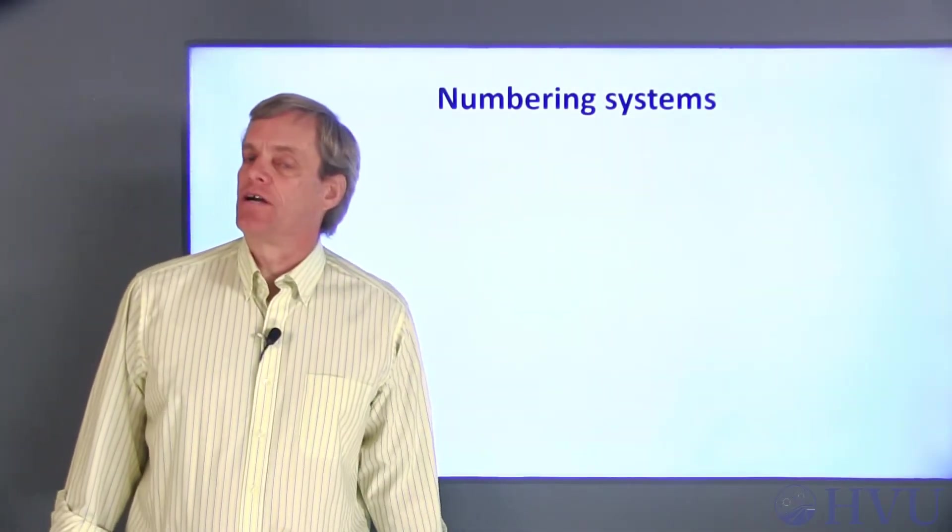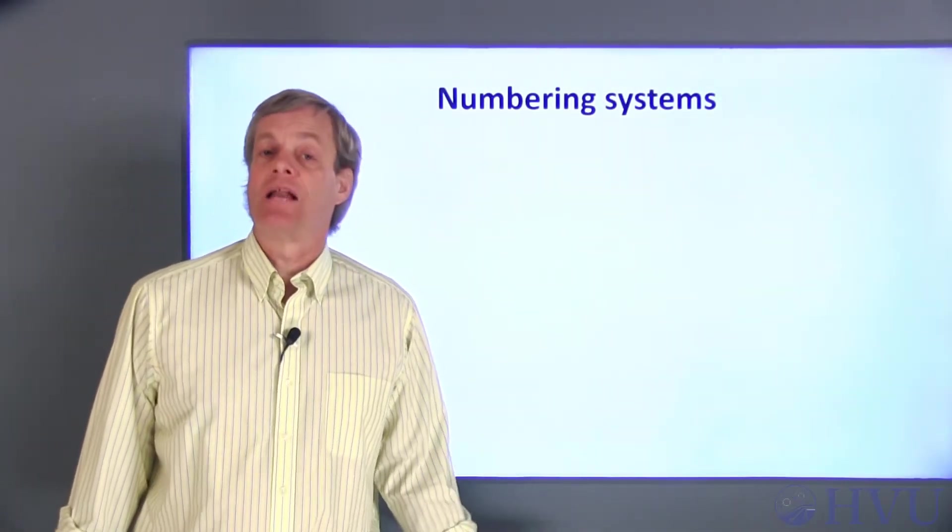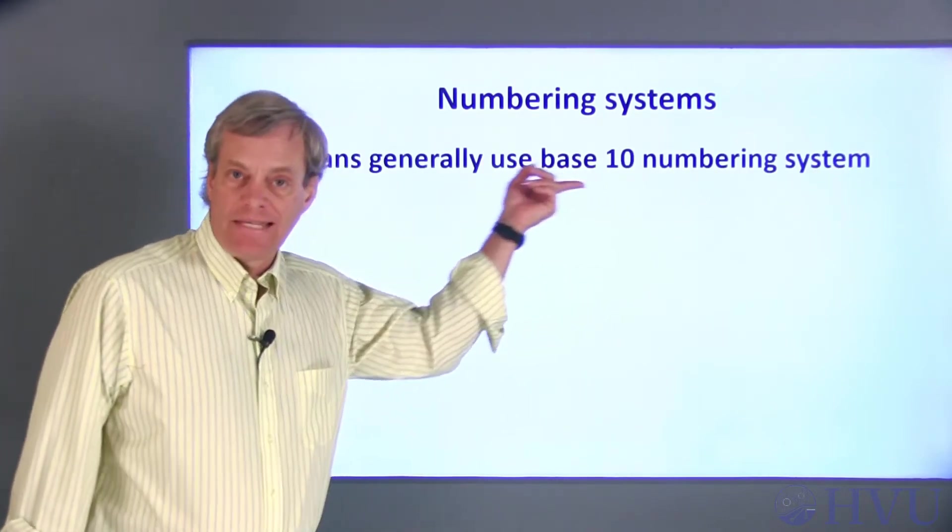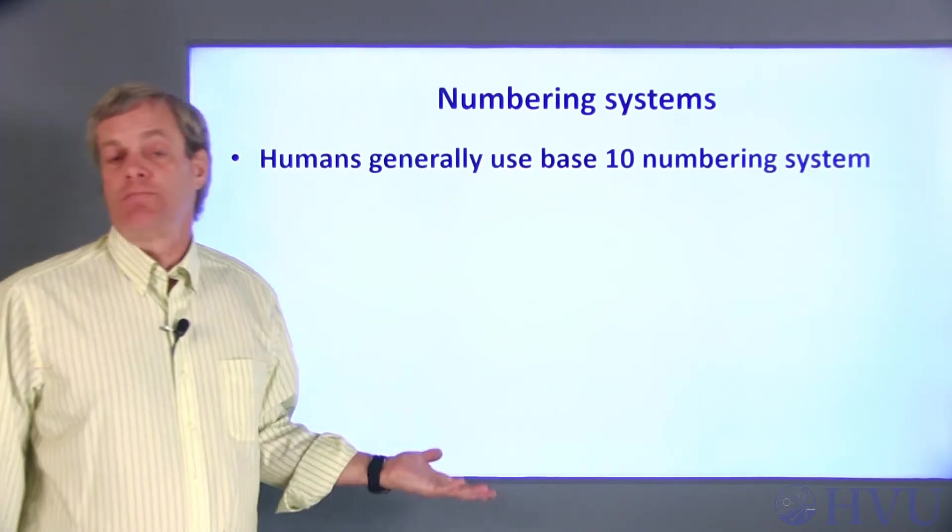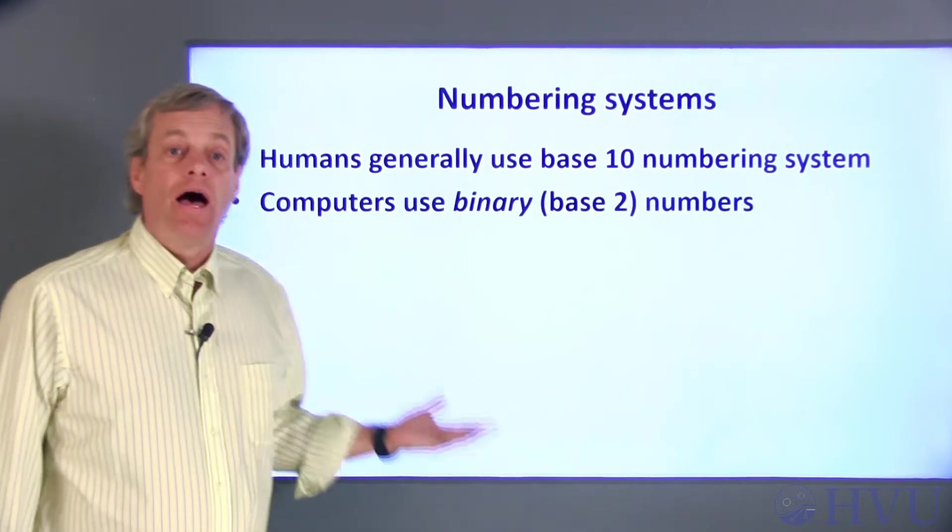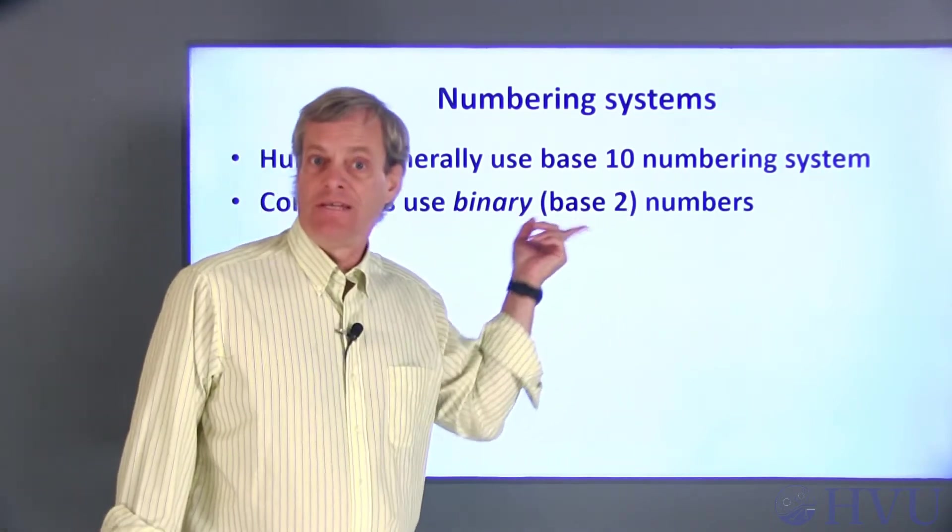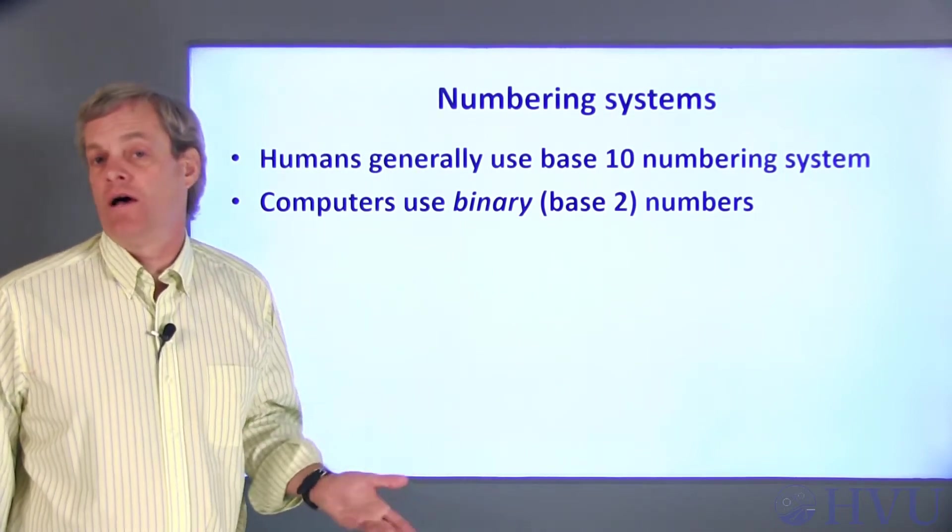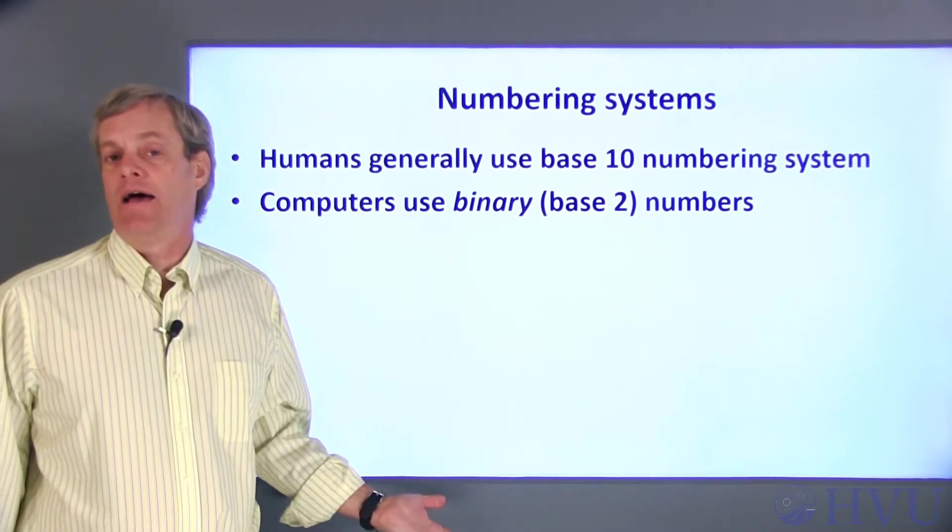The first thing I need to talk about concerns numbering systems and how computers represent numbers. Humans use a base 10 numbering system, which is just because we have 10 fingers. A base 2 numbering system is typical for computers since computers have only two states, on and off or equivalently high and low voltage.